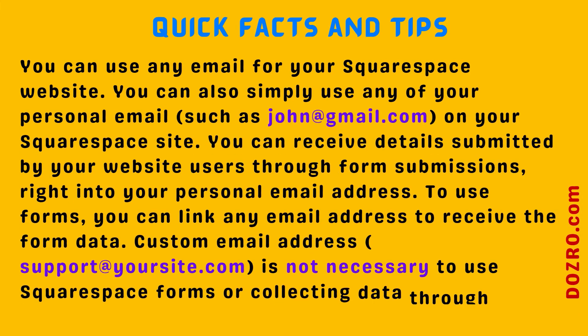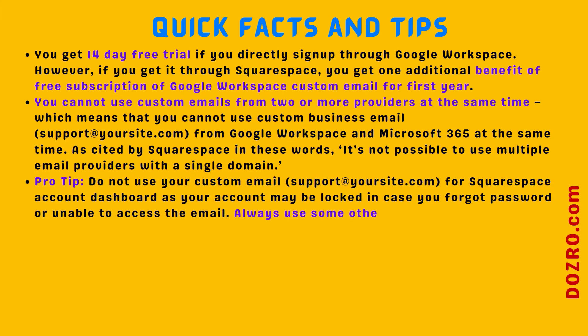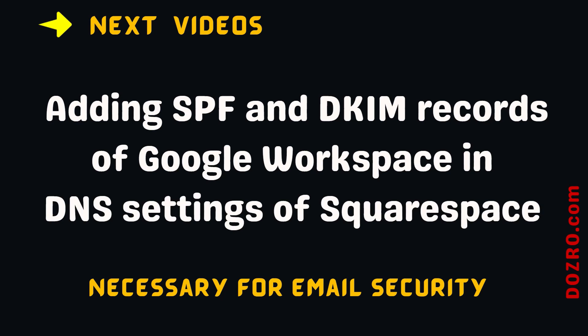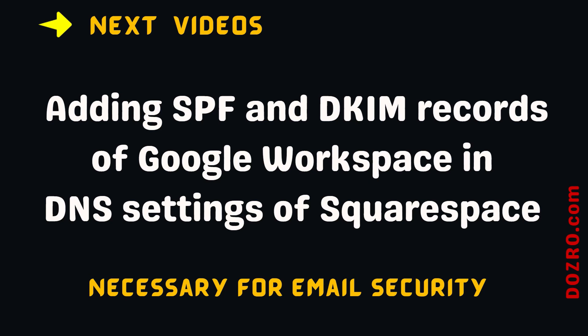Here are some quick facts and tips about getting a custom email from Google Workspace through Squarespace. It is not necessary to get a custom email of Google Workspace through Squarespace — you can also simply use any personal email such as john@gmail.com or john@yahoo.com on your Squarespace website. Through this process, you can also purchase Google Workspace custom email directly from Google and then add MX records as shown in this video. You should also watch our next video about adding SPF and DKIM records of Google Workspace in the DNS settings of Squarespace, as these records are necessary for the security of your custom email.